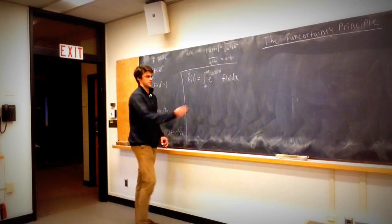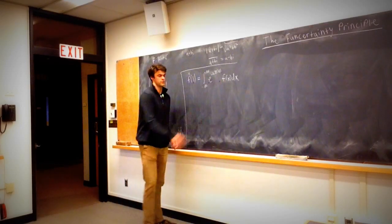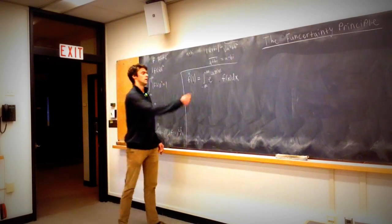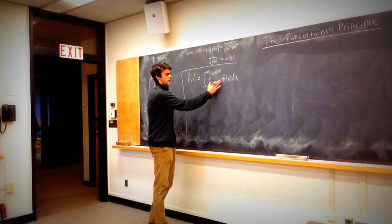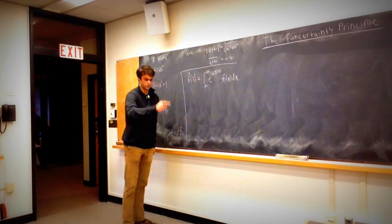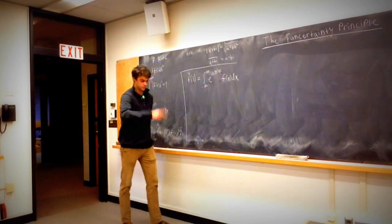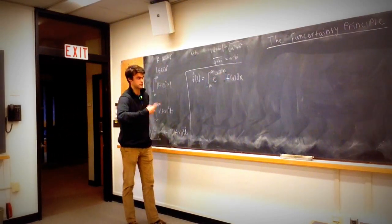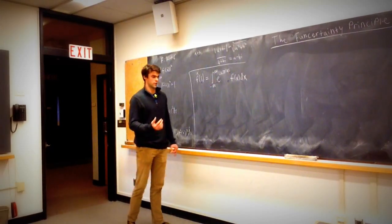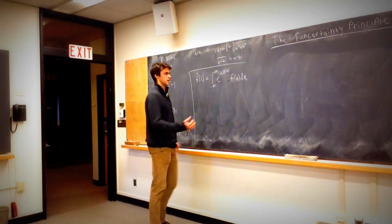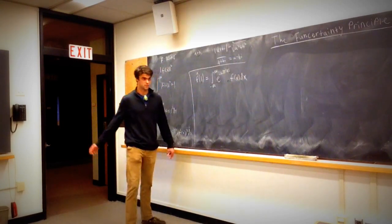This exponential term always has absolute value one. Thinking about the complex plane, as we bring x from minus infinity to infinity, this quantity circles around the unit circle, and when we increase c, it cycles around faster and faster. I like to think of the Fourier transform as picking up the frequencies of f, depending on how we choose c.